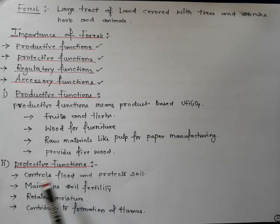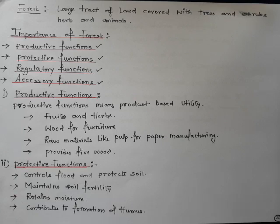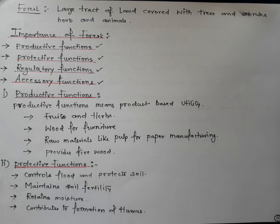Protective functions include controlling floods and protecting soil. The roots of trees in the forest anchor the soil and prevent surface runoff, which reduces flooding. Forests also maintain soil fertility — as dead leaves fall onto the soil, they decompose and add to the nutrient pool, making the soil fertile. So on one hand the roots hold the soil, and at the same time the trees help in enriching the soil.